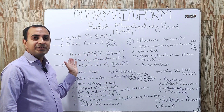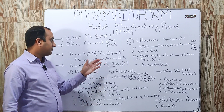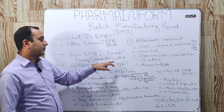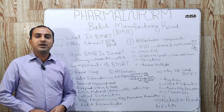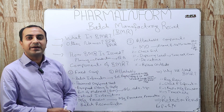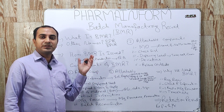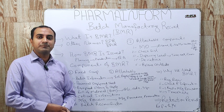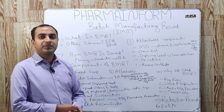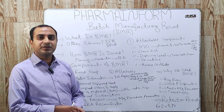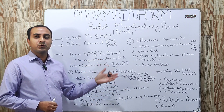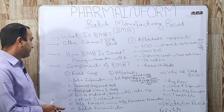How BMR is issued: Planning sends its forecast to production, and production, according to the demand of the market or the priority of products, sends a product BMR request to the QA department. The QA department has a master file of batch manufacturing records and gives a specific batch number to a specific product, then takes its printout and hands it over to the production department where it is reviewed by the production manager. The manufacturing date is added and signed, and it is also cross-checked by the quality assurance manager.